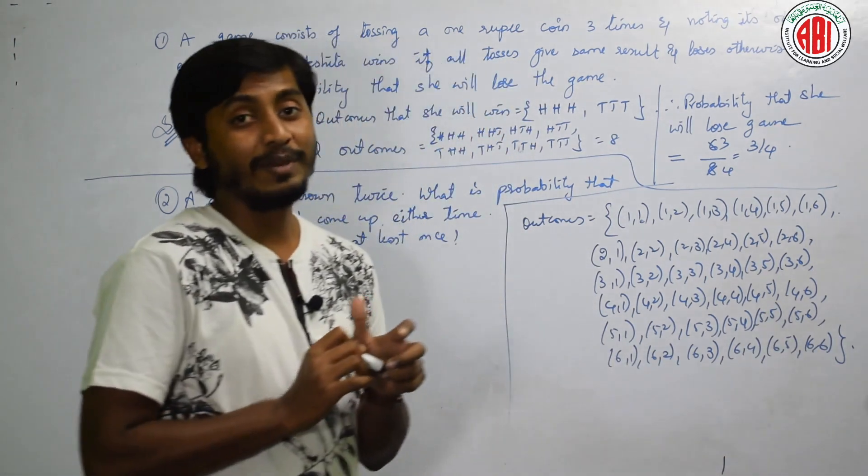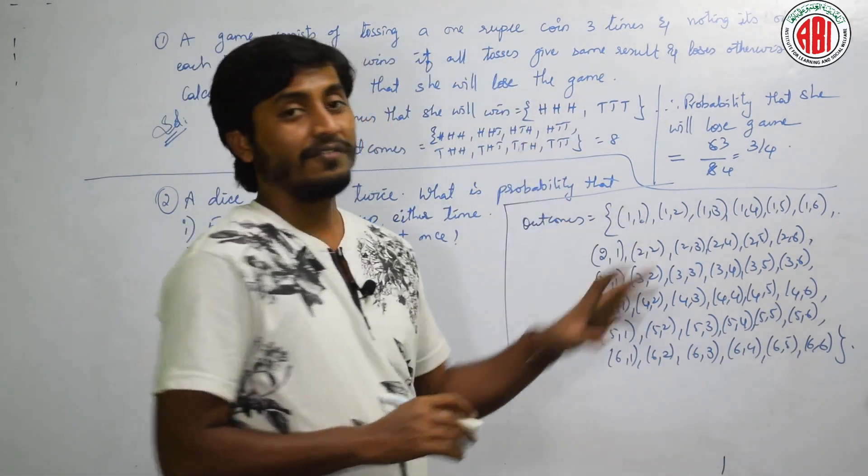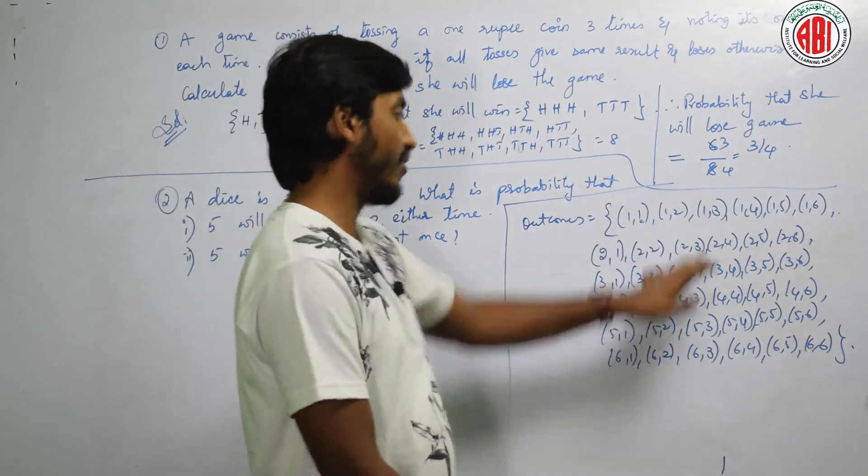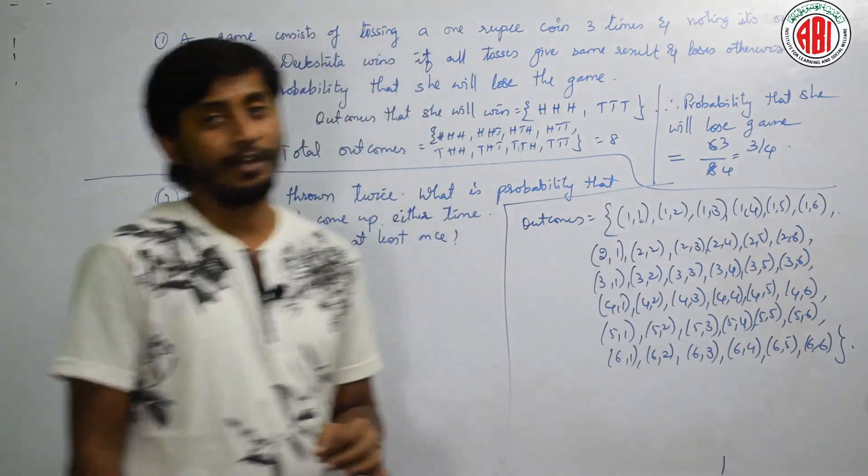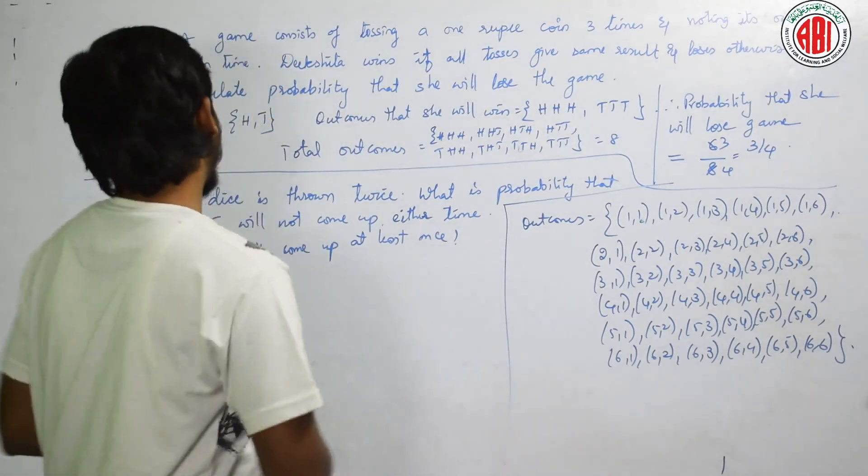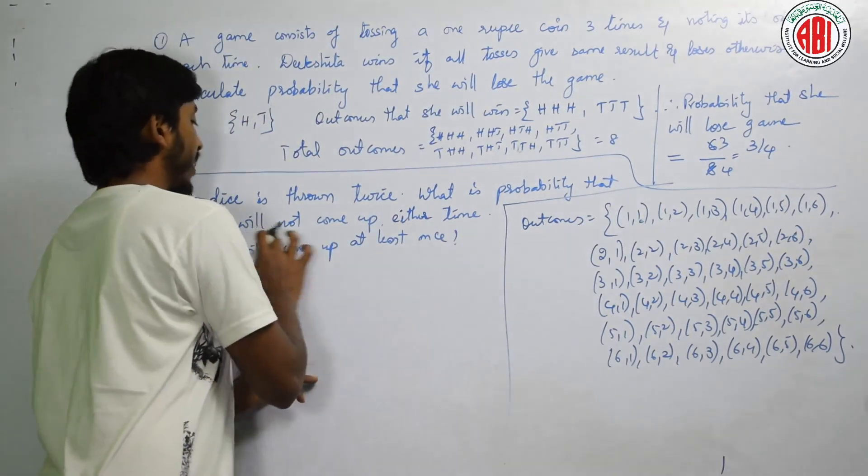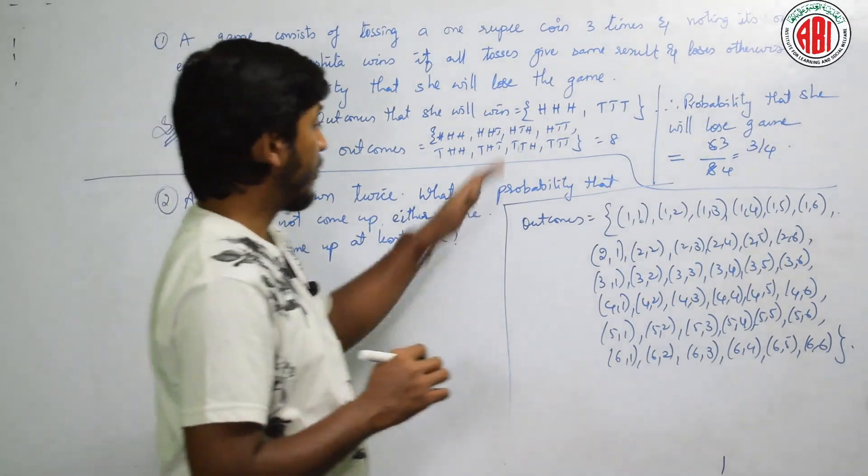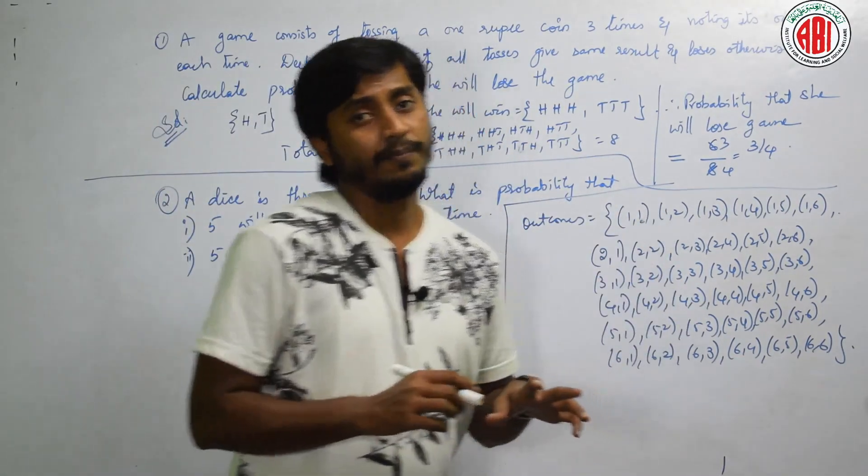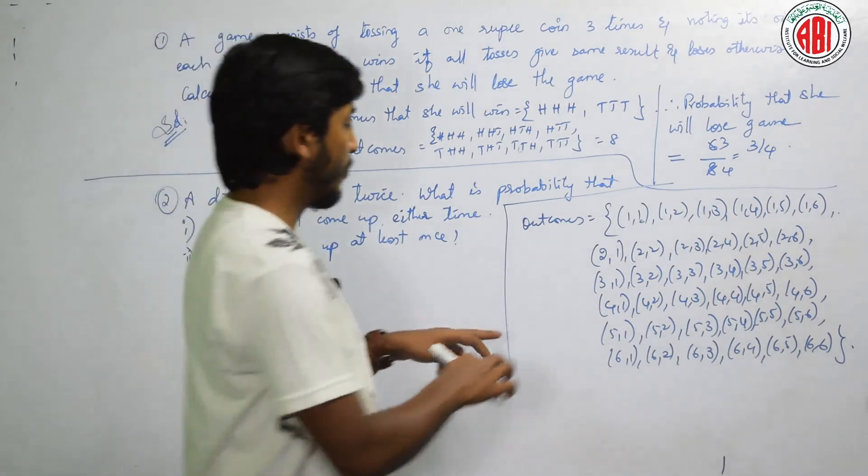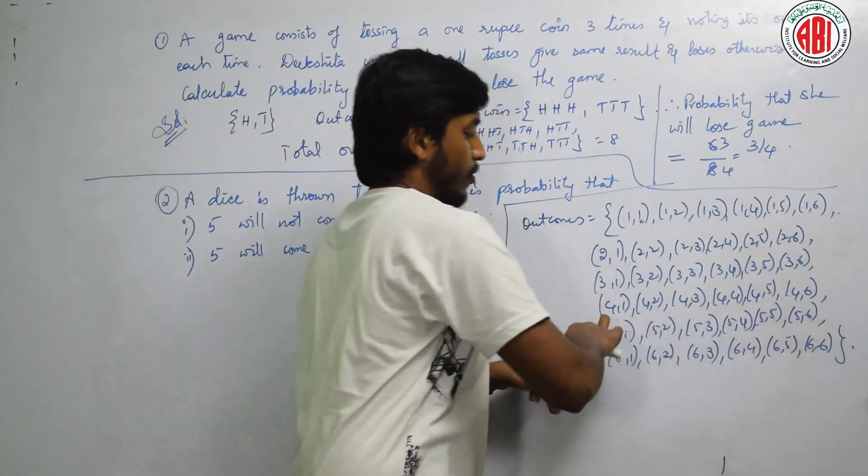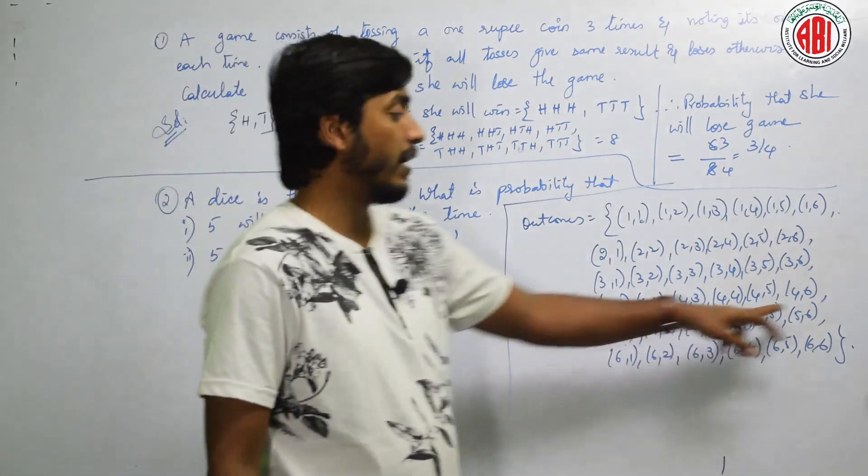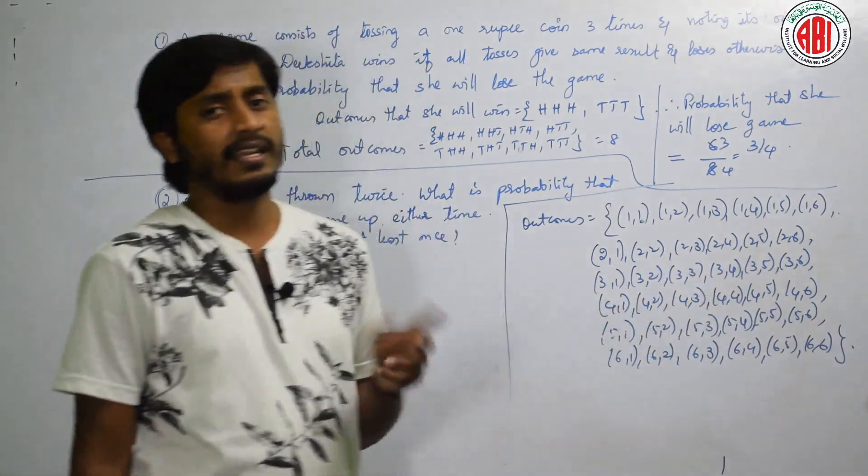Now tell me total how many outcomes are there? 6 on first, 6 on second, 6, 6. 36 outcomes are there. You have to remember this for sure. And he is telling that 5 will not come up either time. How do you do it? Total 6 fives has to be deleted. 36 minus 6 is 30. And remaining terms, 1, 2, 3, 4, 5. 30 means 5 times, 25.